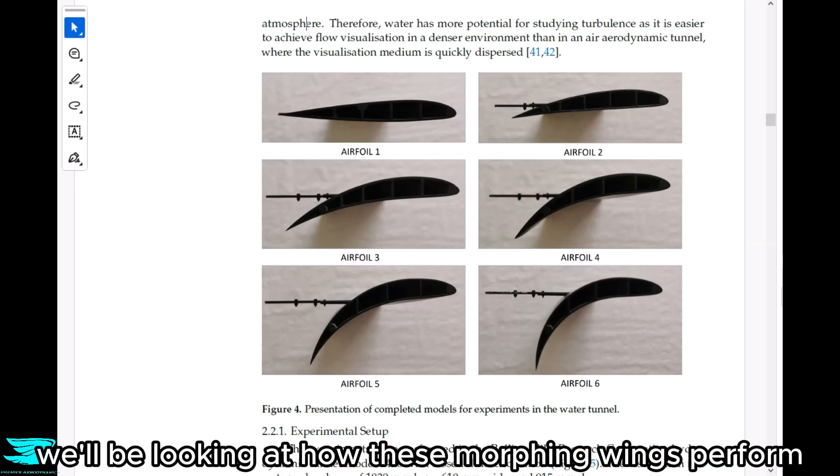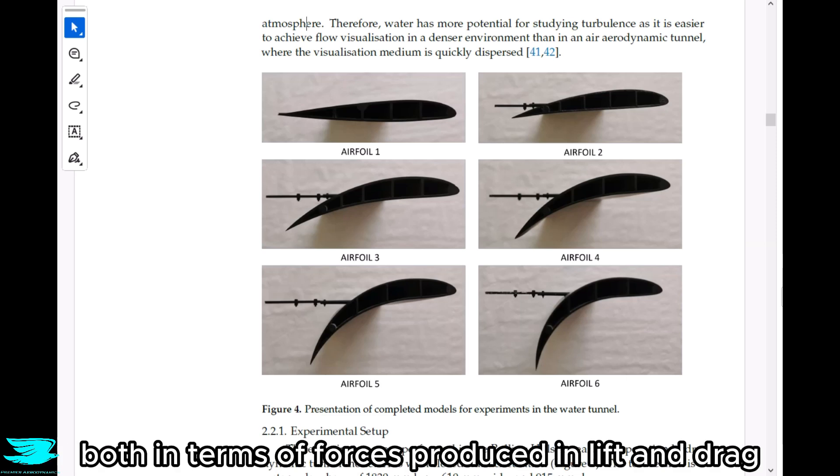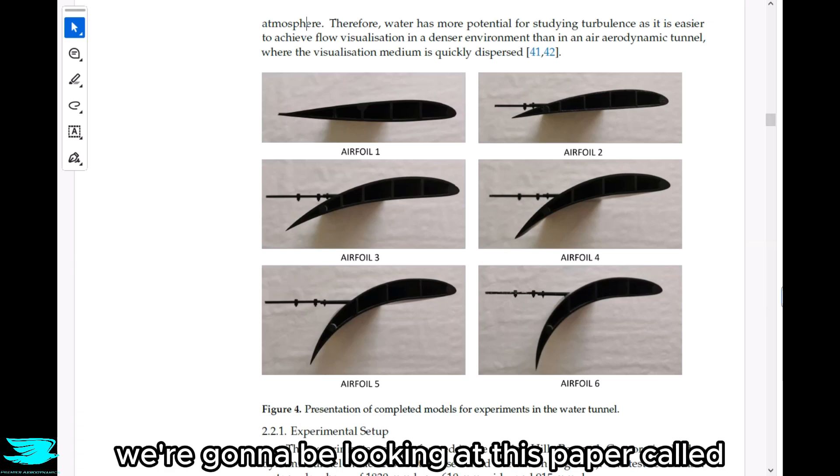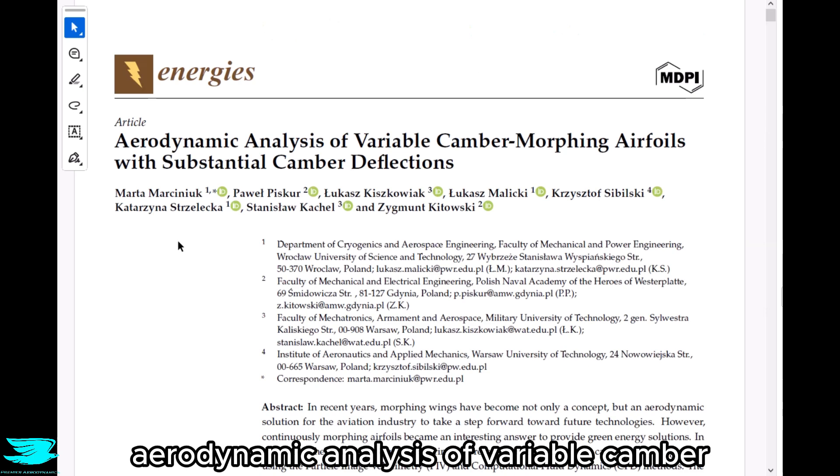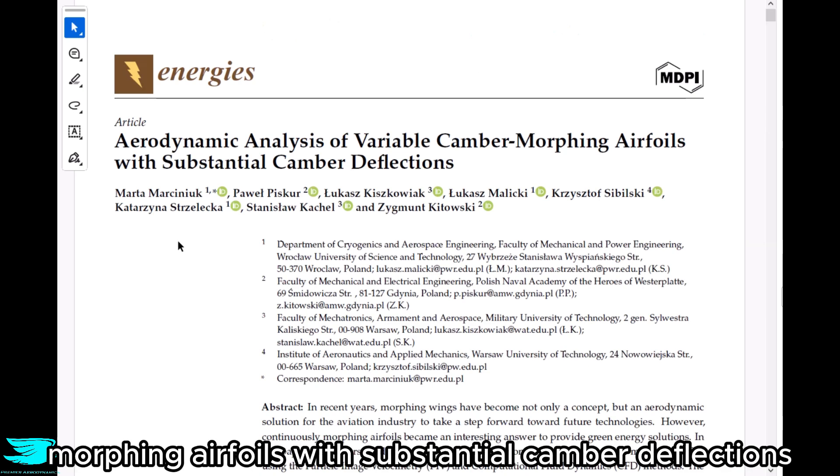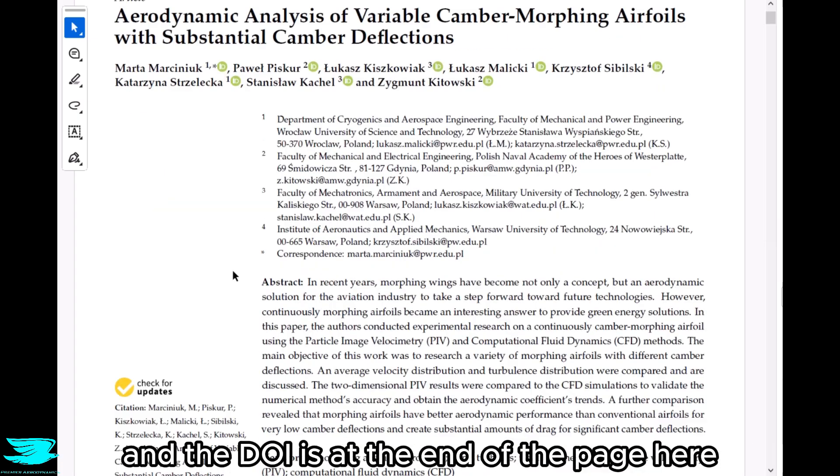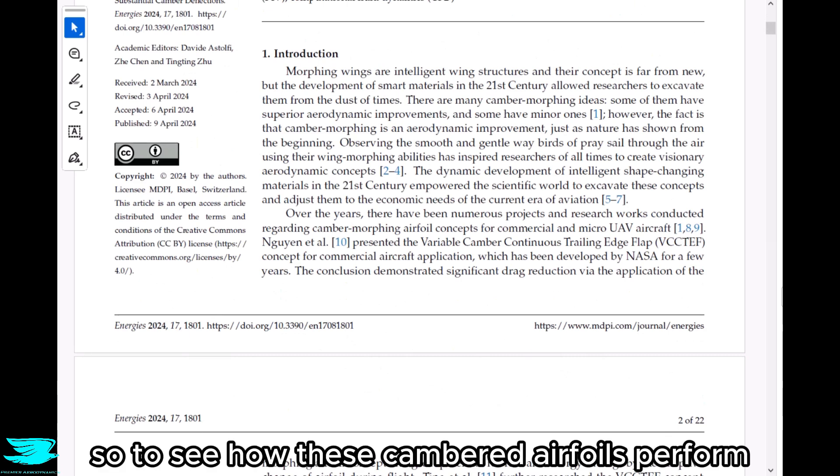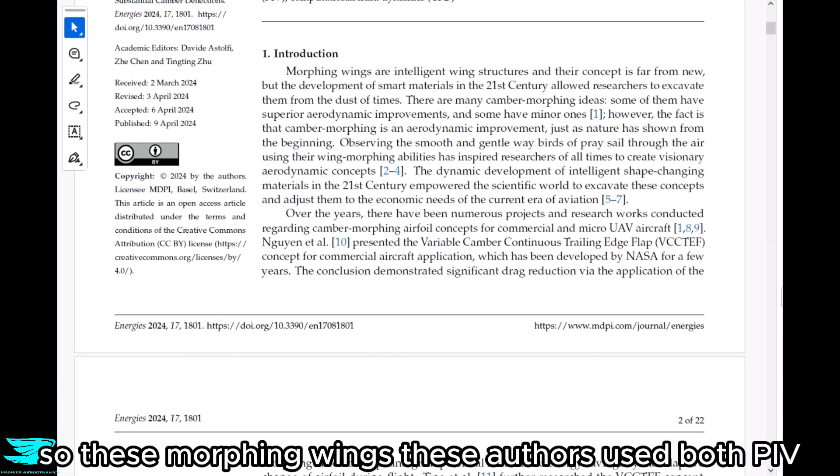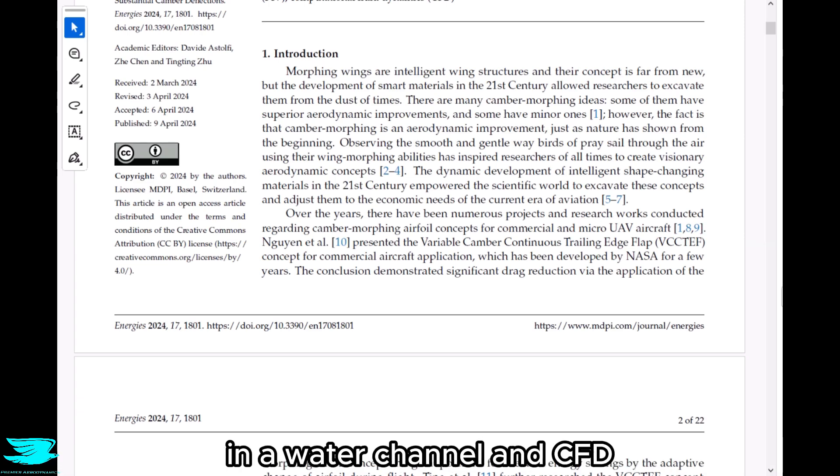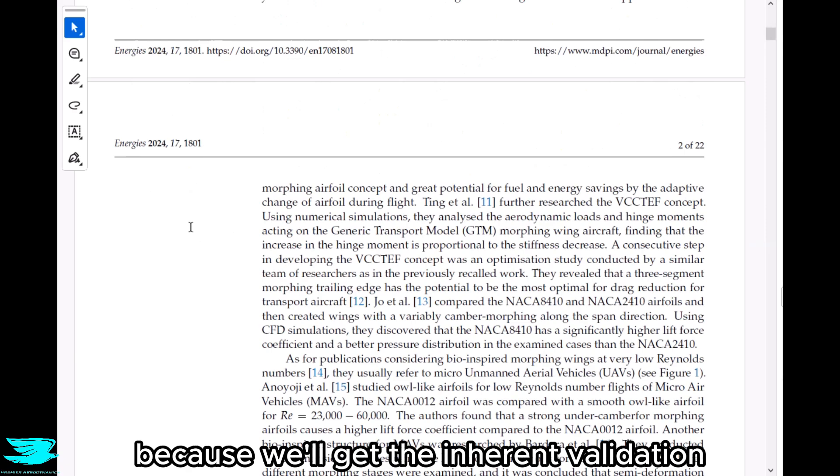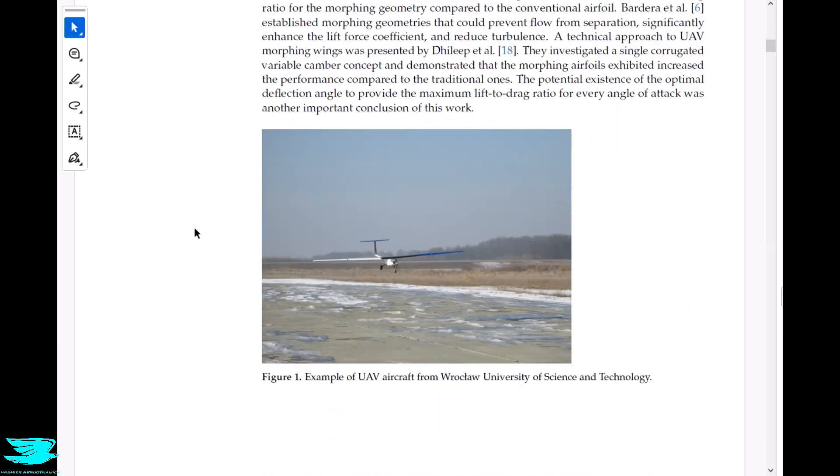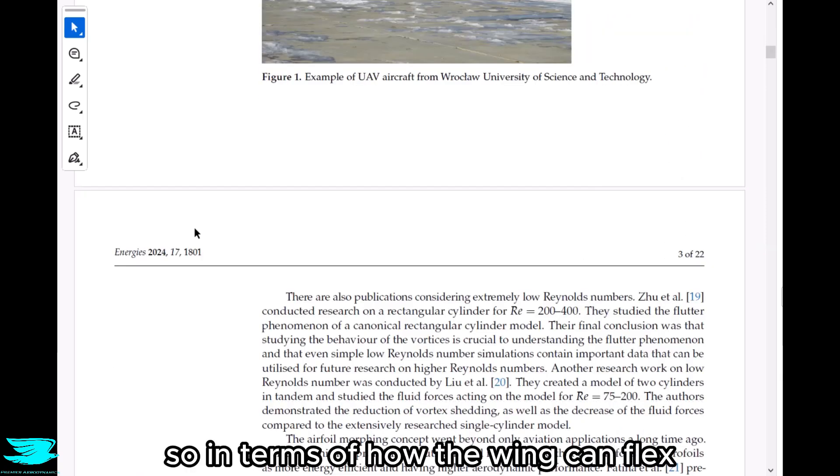So in this podcast, we'll be looking at how these morphing wings perform both in terms of forces produced in lift and drag, but also the flow around them. And to do that, we're going to be looking at this paper called aerodynamic analysis of variable camber morphing airfoils with substantial camber deflections. It's open access and you can find it in the link below. So to see how these cambered airfoils perform, these morphing wings, these authors used both PIV in a water channel and CFD, which is nice to see because we'll get the inherent validation as we can compare the CFD to the experiments, but also additional data from the CFD.